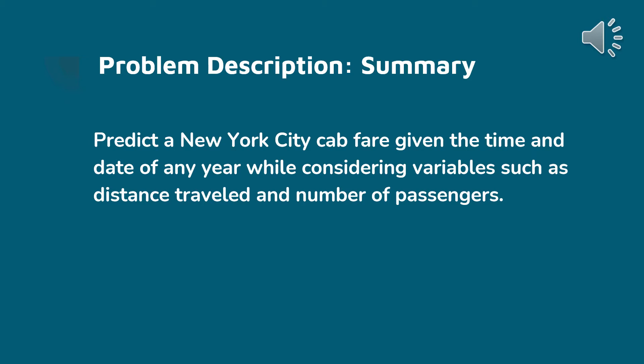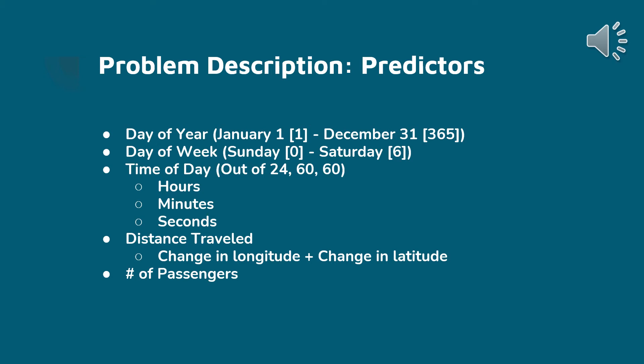In our prediction, we're considering a few variables such as distance traveled and the number of passengers. Our dataset contains two other predictors: the first being the day of the year, with a standard year range starting at January 1st as number 1 until December 31st as number 365. The second predictor is the day of the week, starting on Sunday as number 0 and ending on Saturday as number 6. The third predictor is the time of day, including hours (24), minutes (60), and seconds (60). The fourth predictor is the distance traveled, using change in longitude and change in latitude. Finally, the number of passengers.